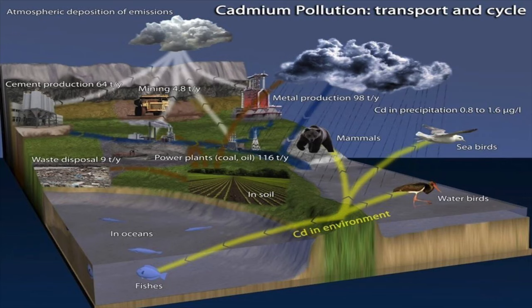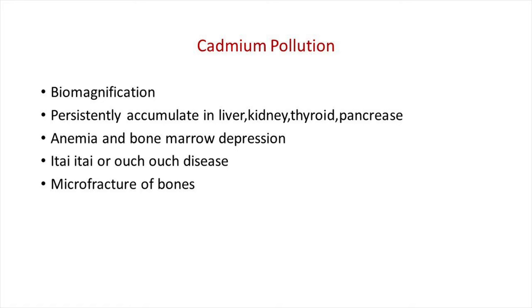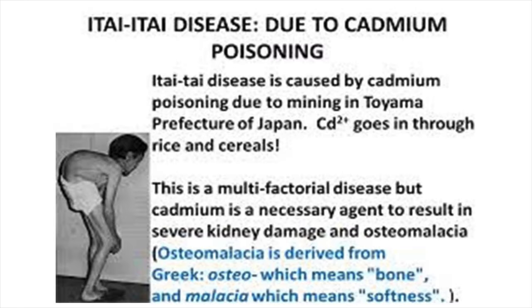Regarding cadmium water pollution, cadmium is introduced into natural waters through effluents from electroplating, paint, ink and plastics industries and from gold jewelry works. Like mercury, cadmium also undergoes biomagnification through the food chain, reaching its maximum level in humans. Cadmium persistently accumulates in the liver, kidney, pancreas and thyroid. At high levels it causes damage to lungs and kidneys, and causes anemia and bone marrow depression.